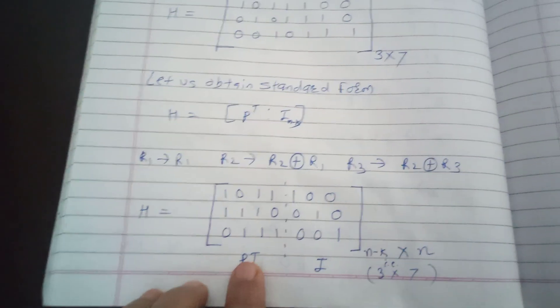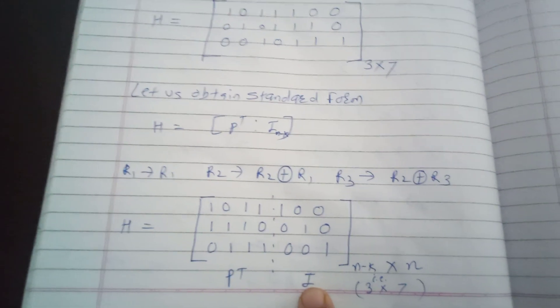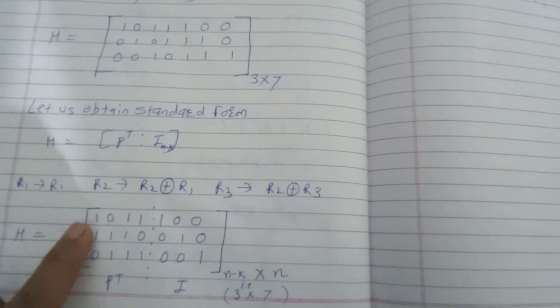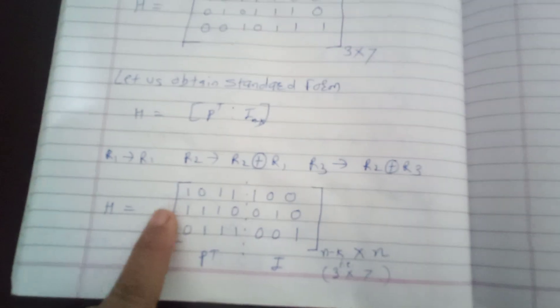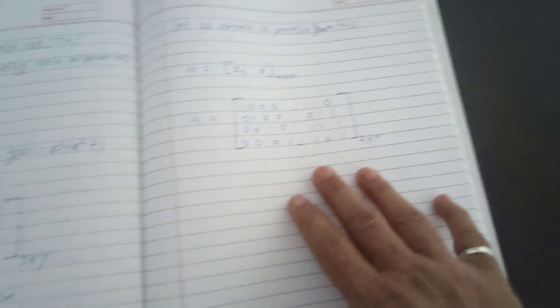The matrix is now in standard form where the left portion is P^T and the right 3×3 portion is the identity matrix. From this, the generator matrix G = [I_k | P]. Here I_k is the 4×4 identity matrix, and P is obtained by transposing the P^T portion. Writing the columns of P^T as rows of P gives: row 1: 1 1 0; row 2: 0 1 1; row 3: 1 1 1; row 4: 1 0 1. So the full 4×7 generator matrix is I₄ followed by these four rows.